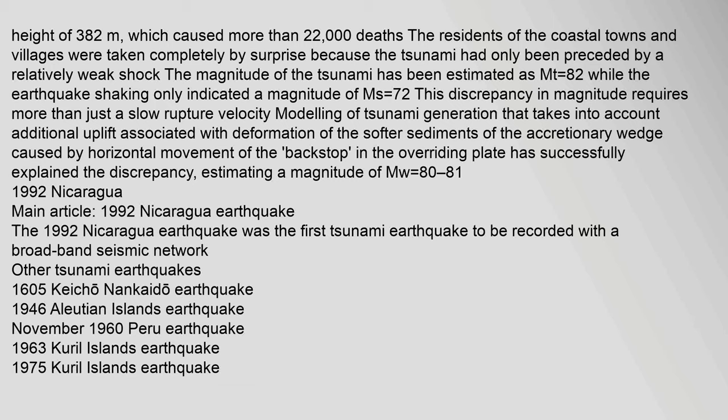The magnitude of the tsunami has been estimated as MW equals 8.2, while the earthquake shaking only indicated a magnitude of MS equals 7.2. This discrepancy in magnitude requires more than just a slow rupture velocity. Modeling of tsunami generation that takes into account additional uplift associated with deformation of the softer sediments of the accretionary wedge, caused by horizontal movement of the backstop in the overriding plate, has successfully explained the discrepancy, estimating a magnitude of MW 8.0–8.1.